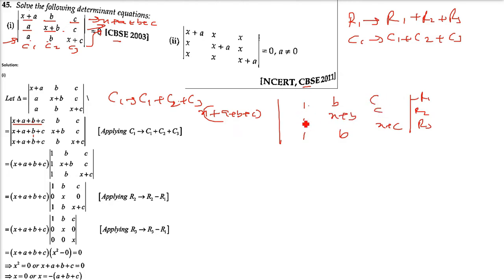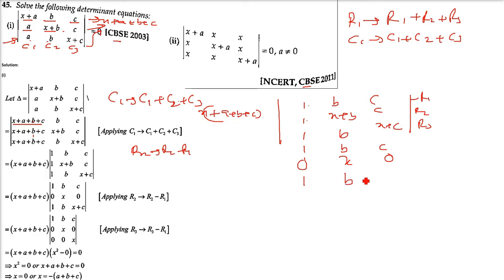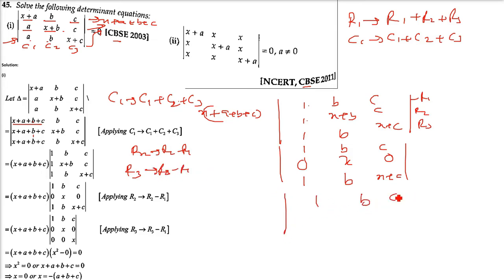We will do R2 → R2 minus R1 and R3 → R3 minus R1. This is the normal thing we do in this type of question. So R2 minus R1: 1 minus 1 is 0, X+B minus B is X, C minus C is 0. Row 1 remains 1, B, C. Now Row 3 we change to R3 minus R1: 1 minus 1 is 0, B minus B is 0, and X+C minus C is X.